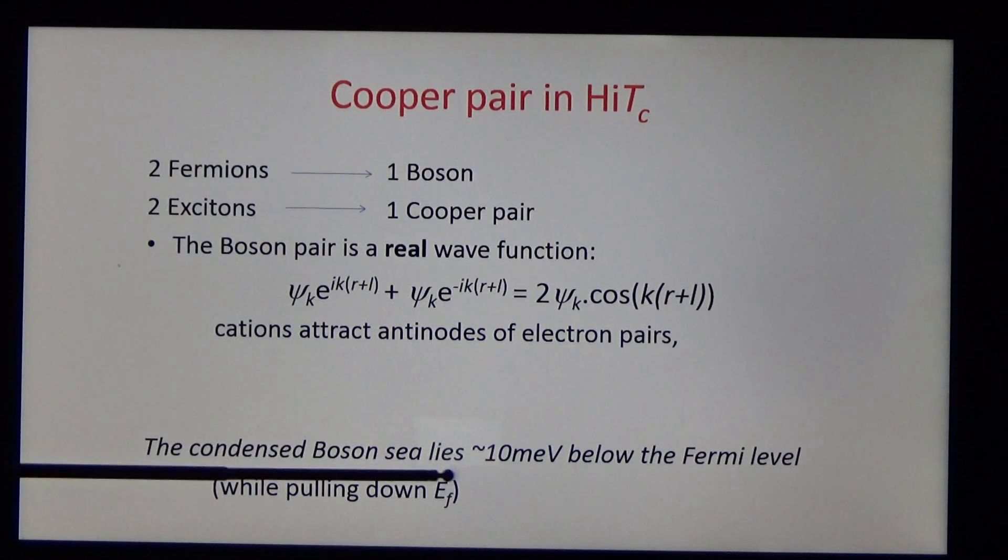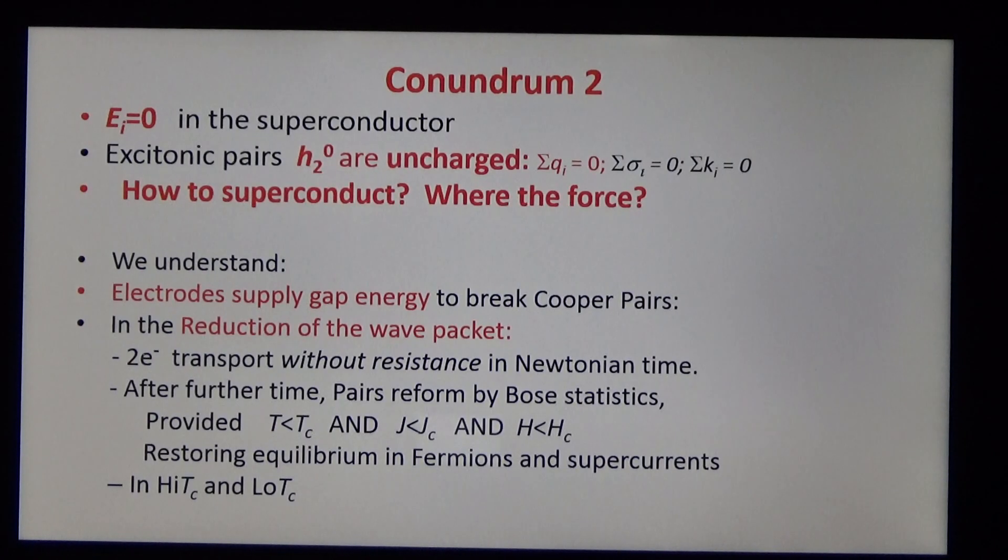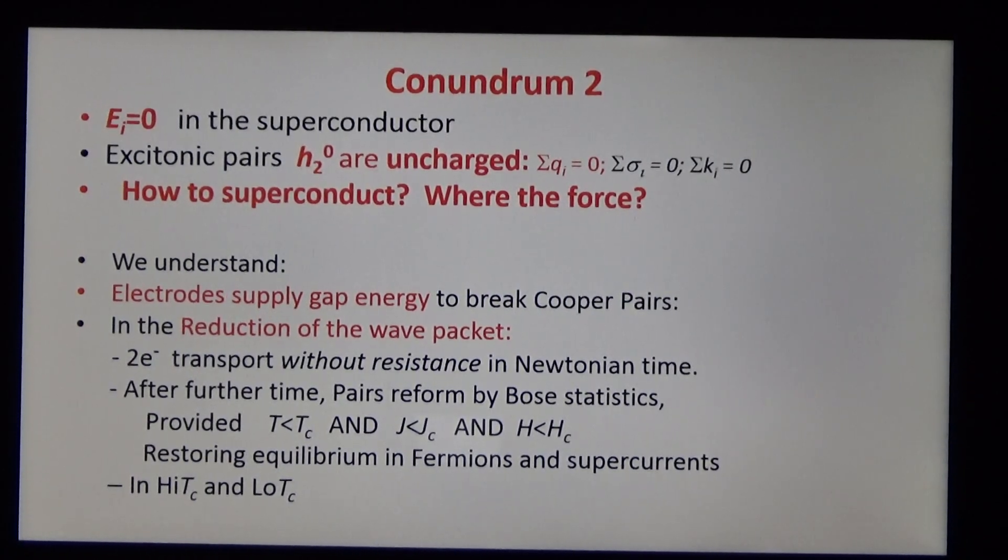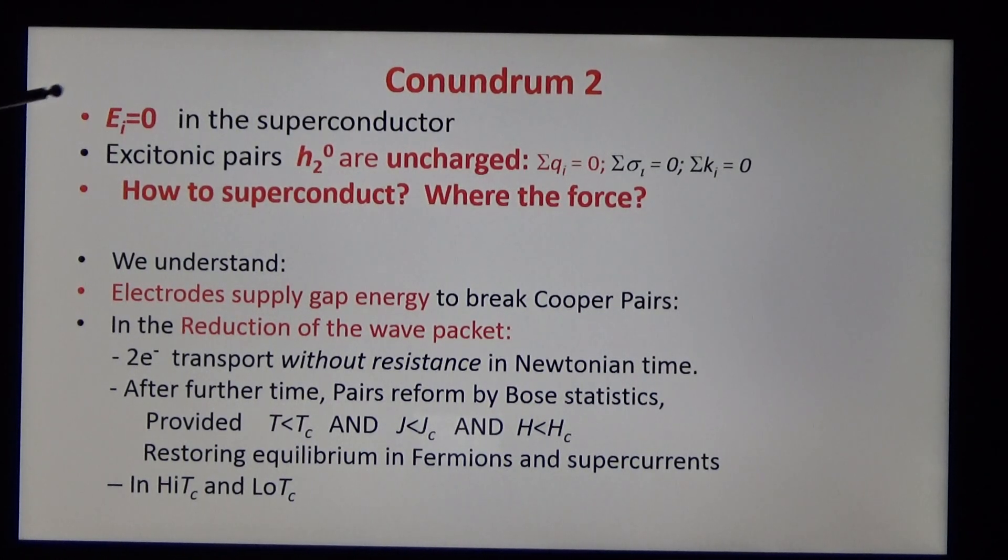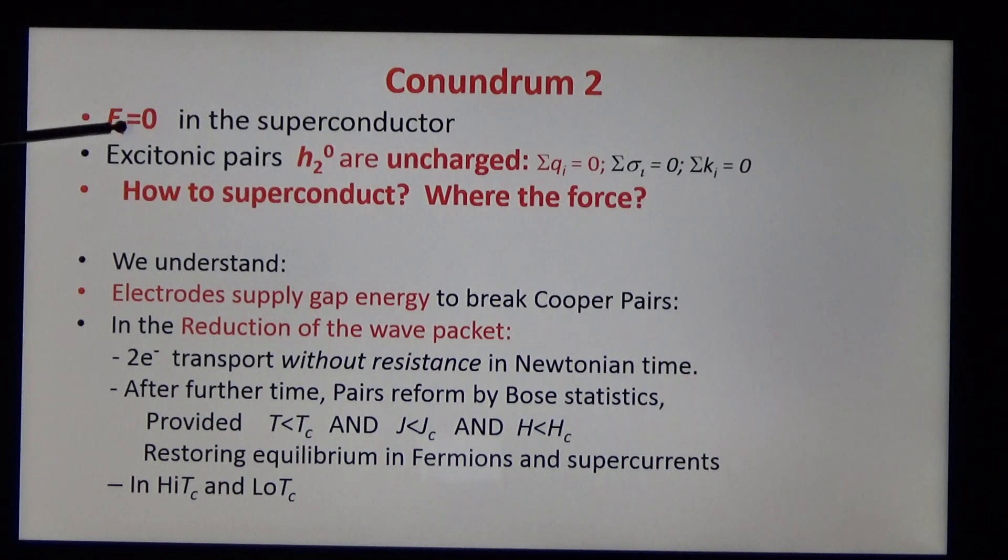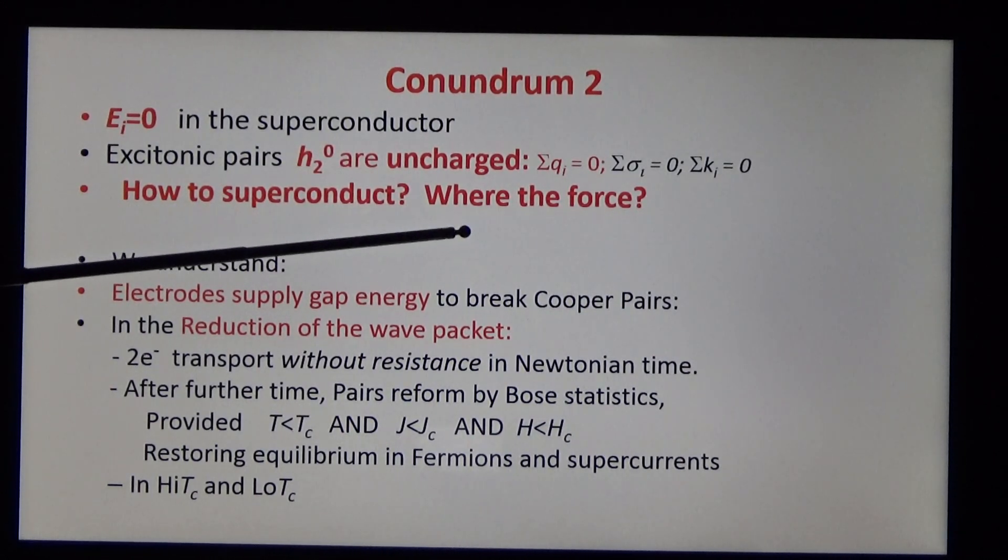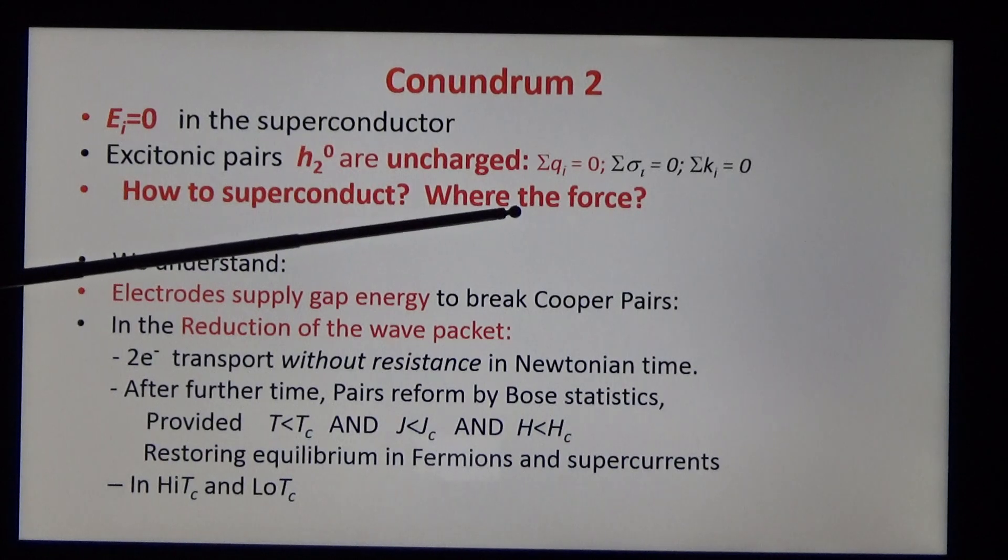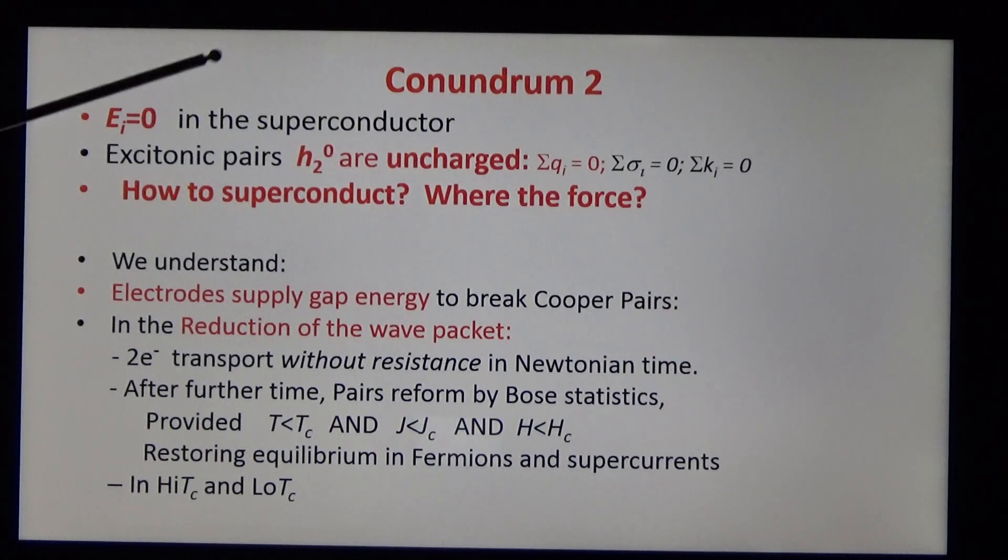The condensed boson sits 10 mEV below the Fermi level. But now we have another conundrum, even harder than the previous one. In a superconductor, the electric field, for obvious reasons, is equal to zero. And the excitonic pairs are uncharged. And yet we measure a supercurrent. What are the electrodynamics? Where is the force?